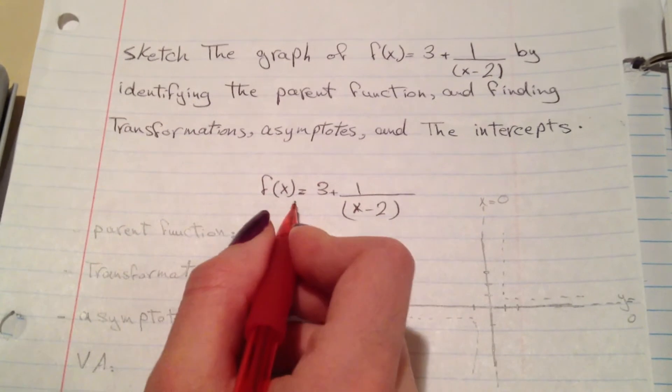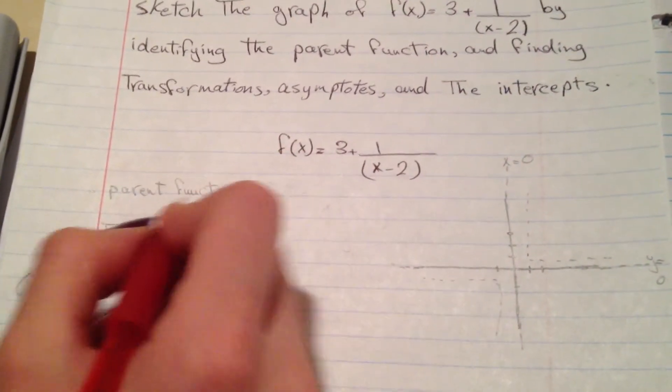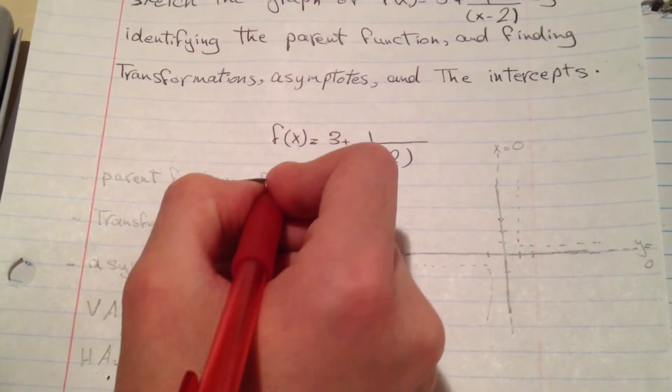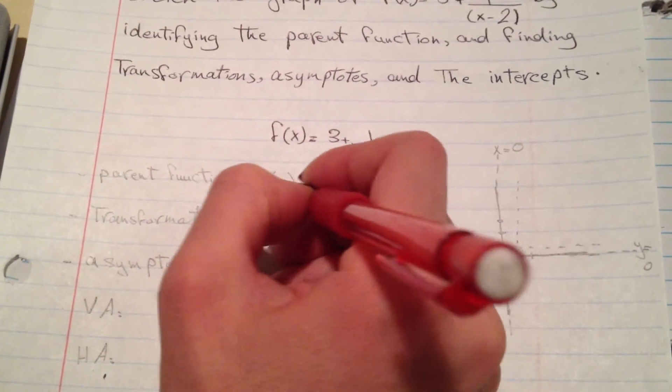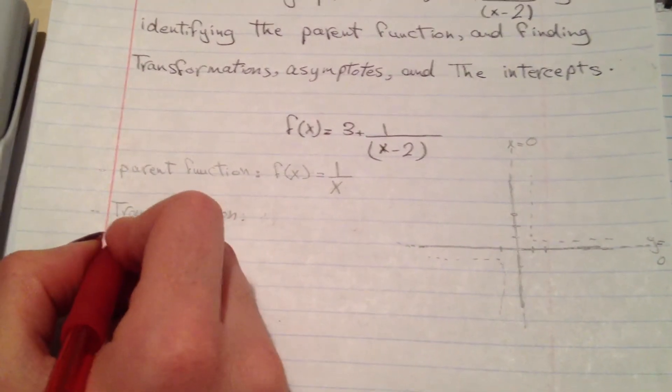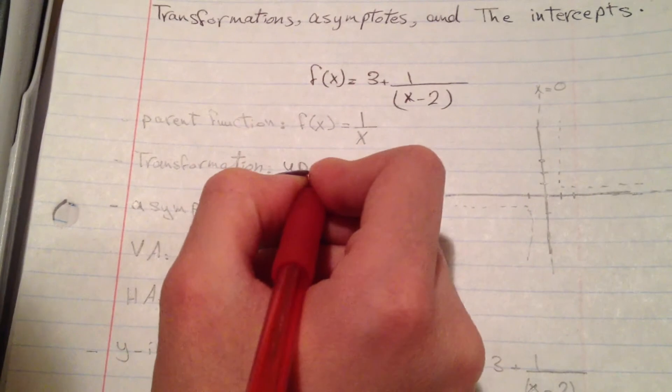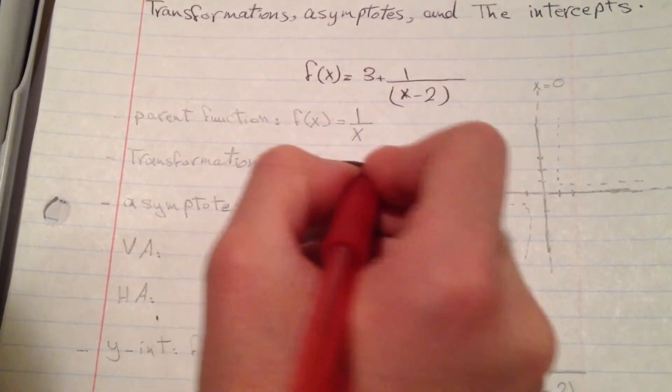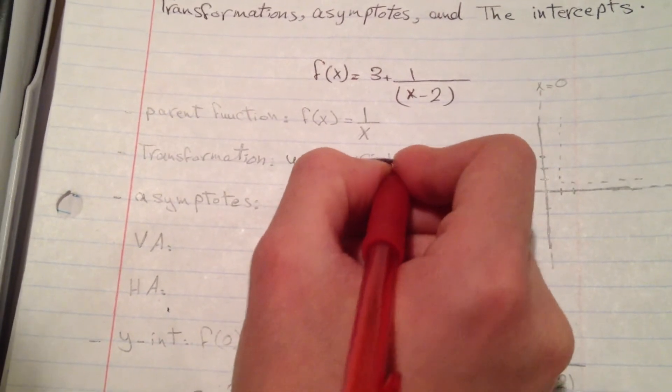We have f(x) = 3 + 1/(x-2). The parent function is f(x) = 1/x. The transformations are up 3 and to the right 2.